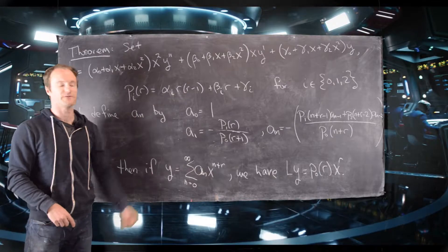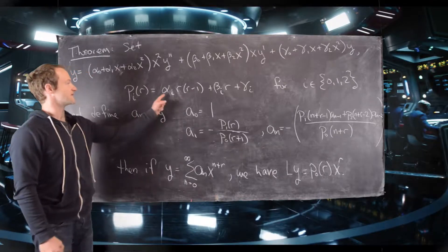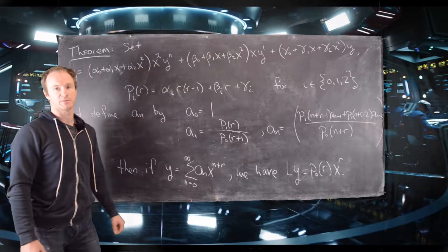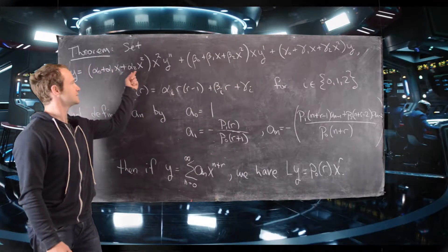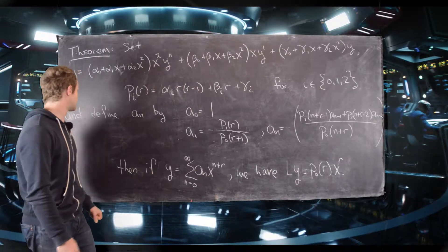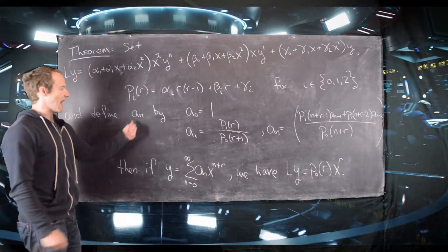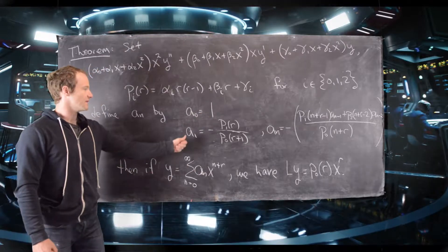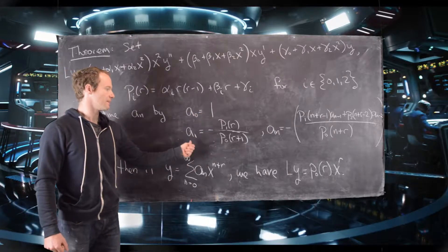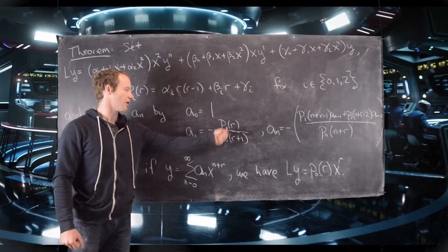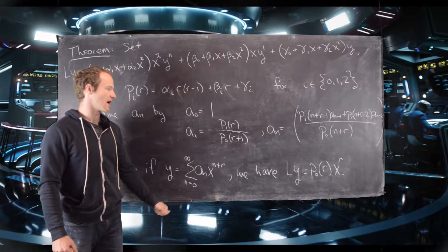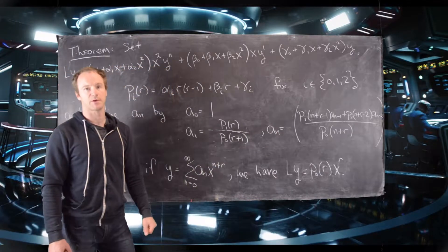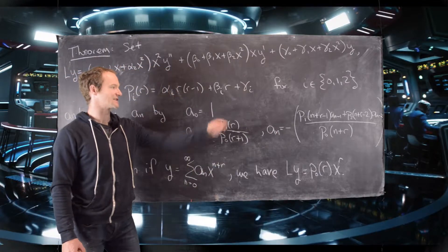If we set π_i equal to the following polynomial: alpha_i times r(r−1) plus beta_i times r plus gamma_i, for i equal to 0, 1, and 2 — so it's built out of these coefficients — and we define a_n as follows: a_0 is 1, a_1 is negative p_1(r) divided by p_0(r+1), and a_n is defined recursively in terms of the previous two terms.